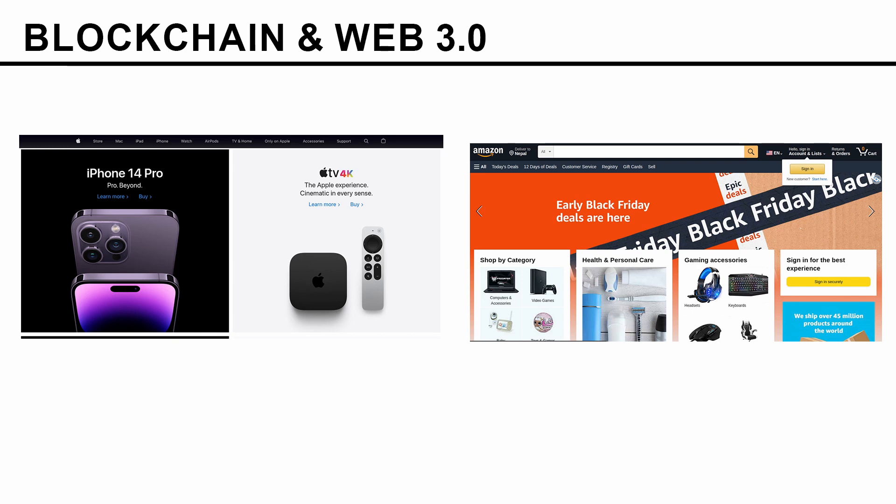Now if you look at the present, here are the websites of Apple and Amazon. You can see the difference clearly — now you can interact with the websites, create an account, purchase things, and lots of other things. All this together is called Web 2.0. This term was popularized around 2004 and it signifies the shift in how we experience websites and the internet — from basic text, images, and links to everything you are seeing at present.